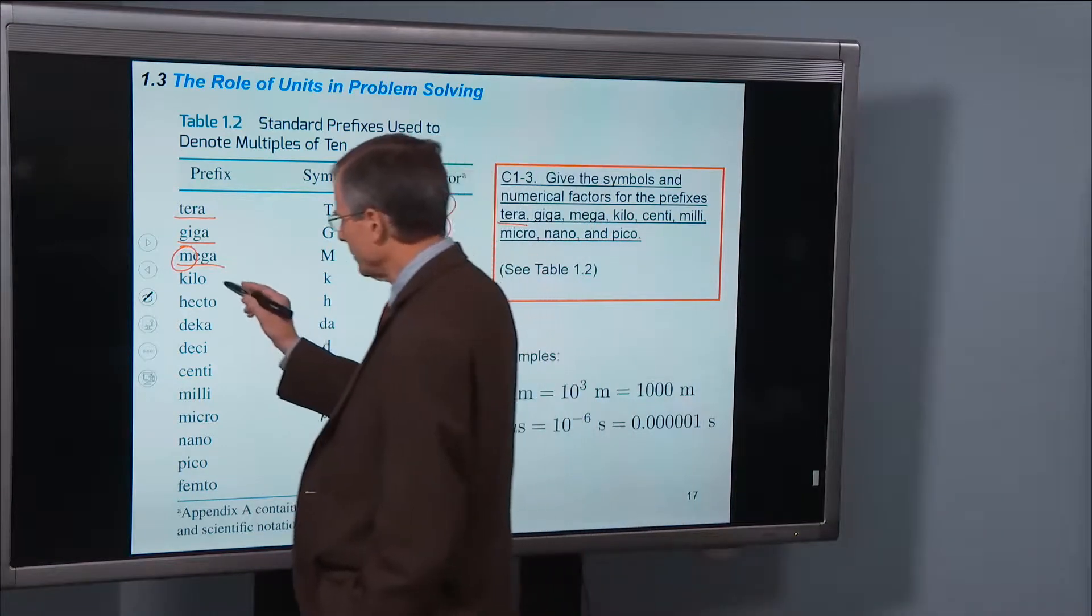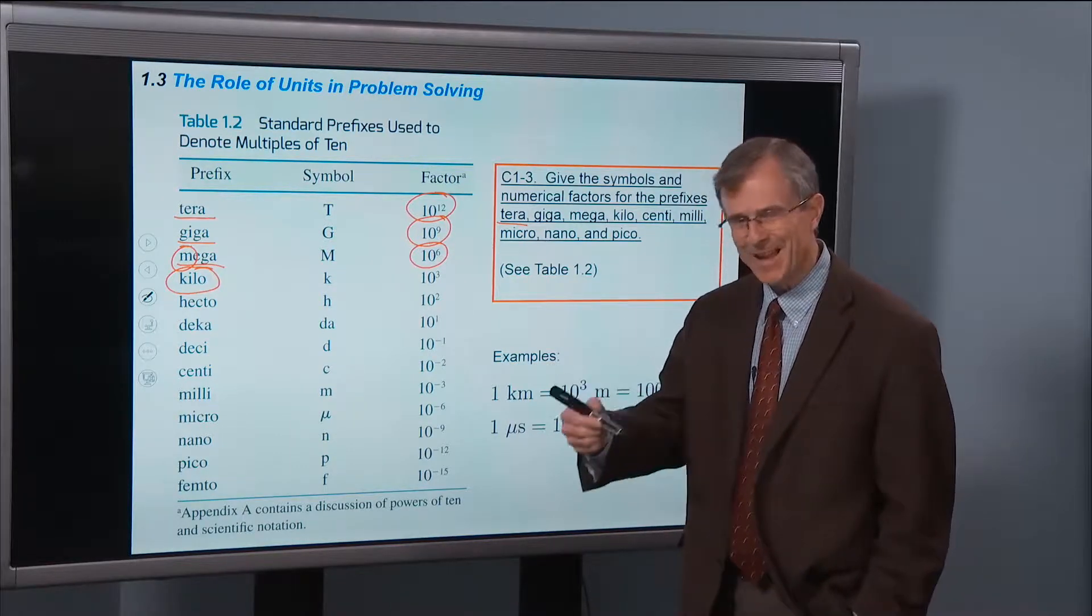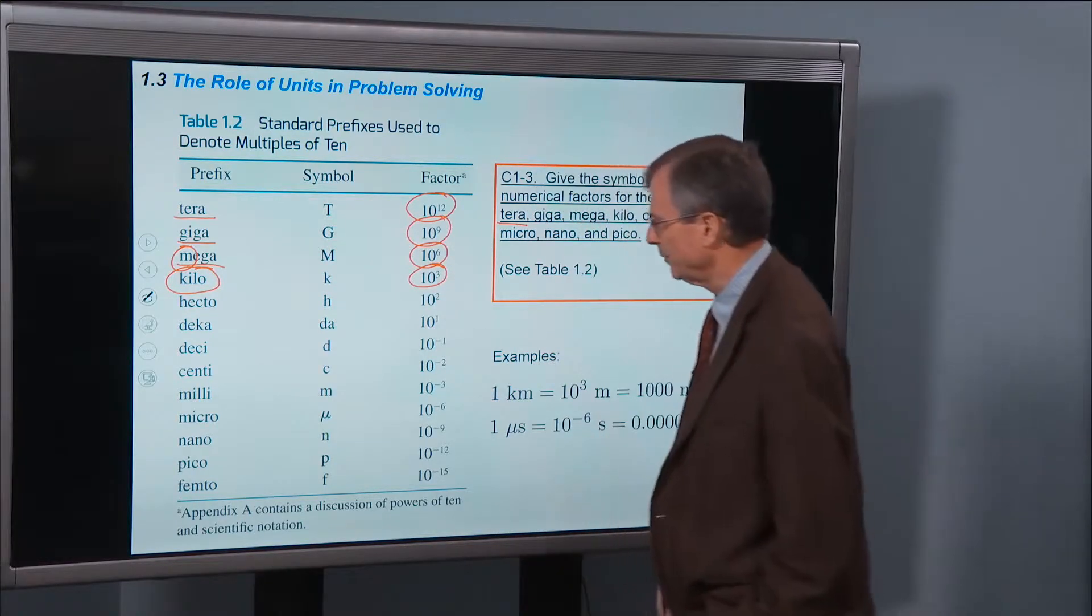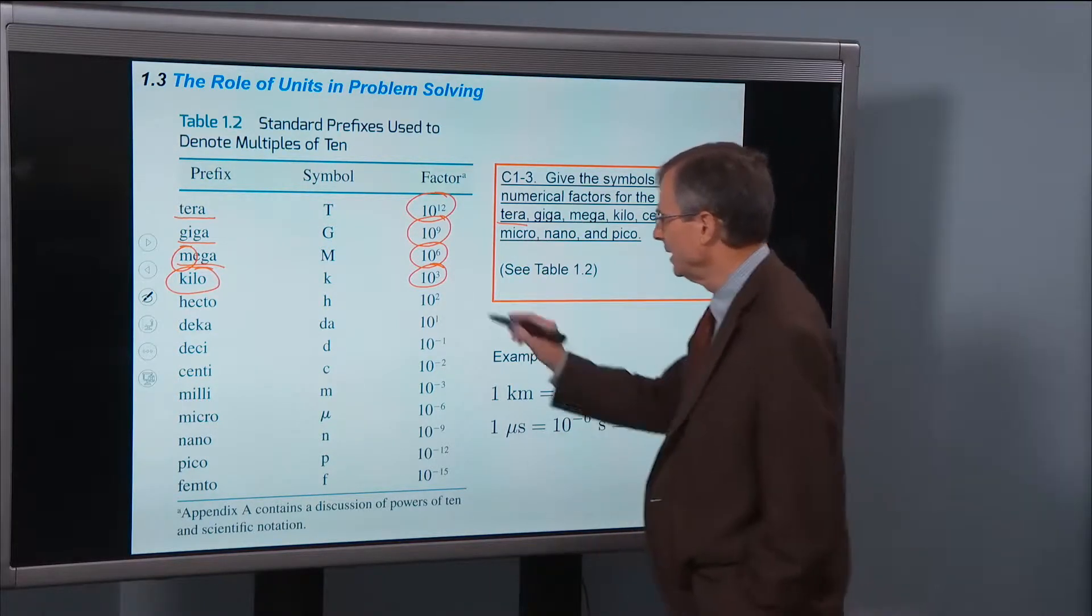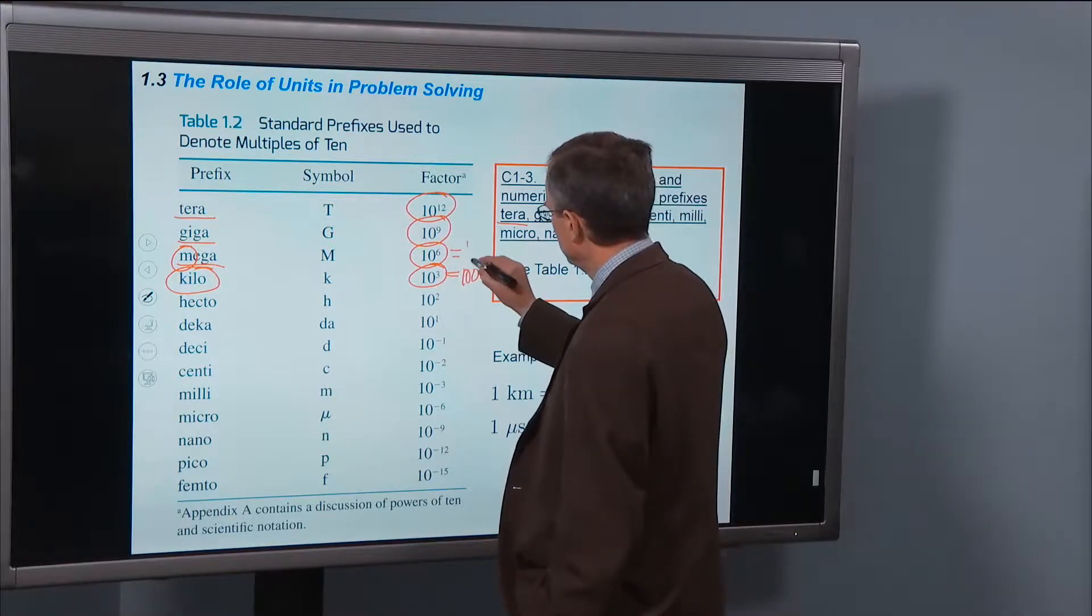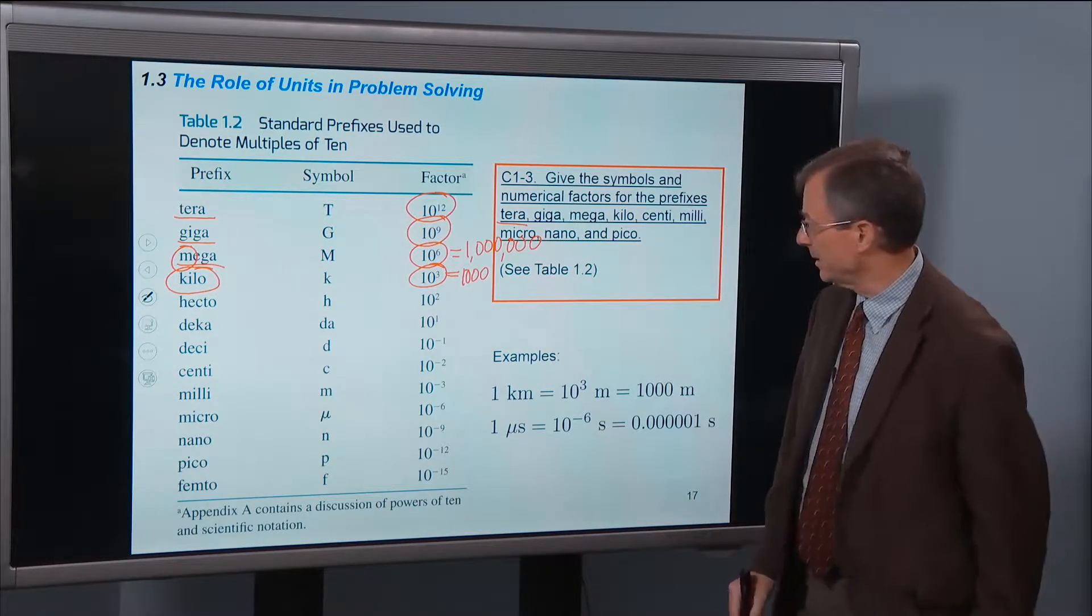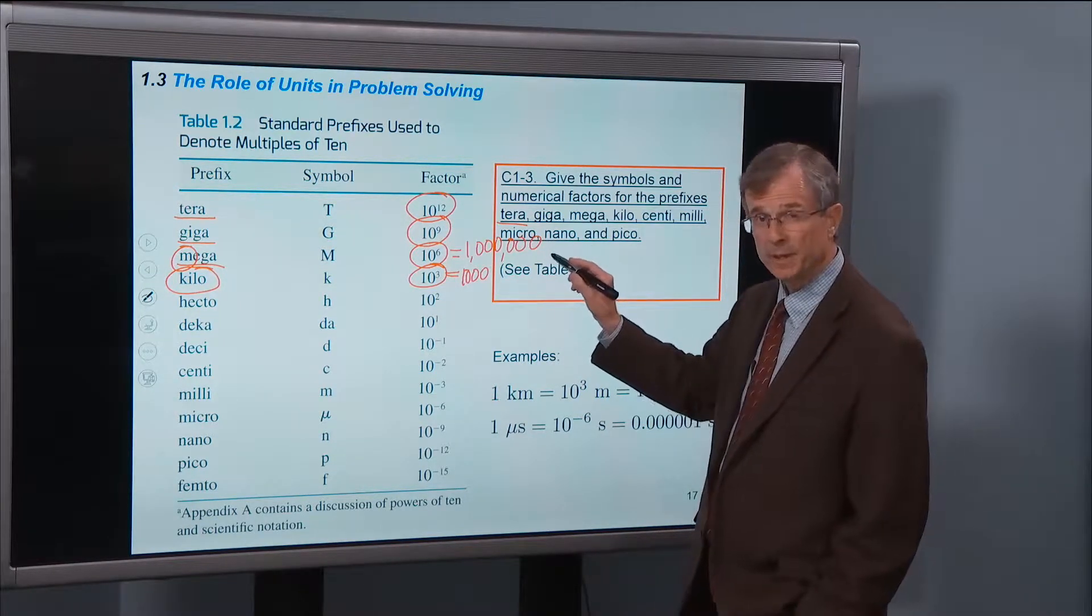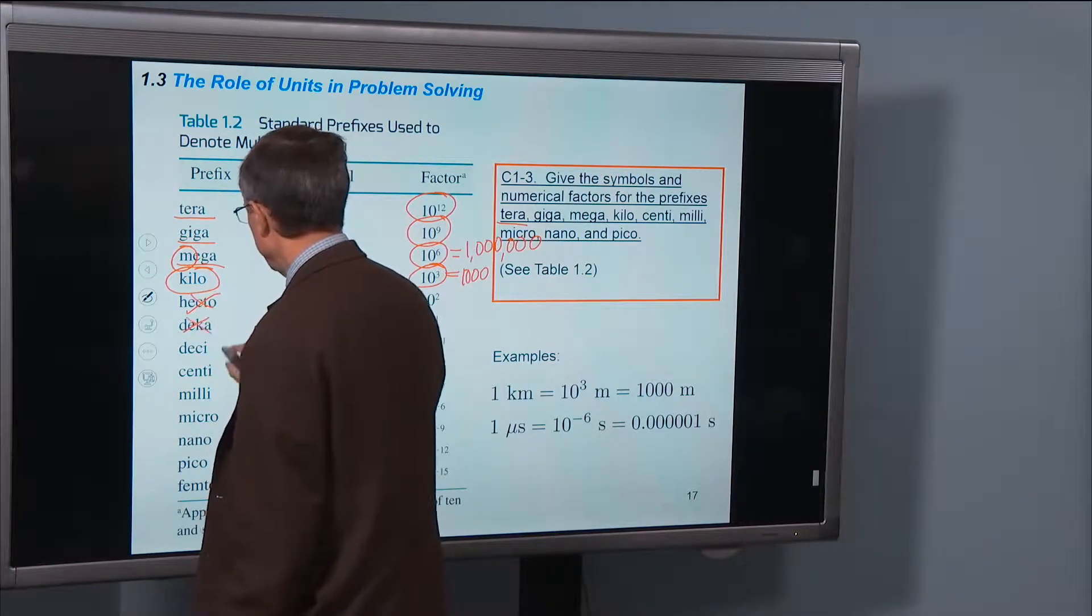Kilo - a kilometer, as many of you runners know, a kilometer is a thousand meters or 10 to the 3 meters. So that's one that's very familiar. Kilogram is another example, a thousand grams. 10 to the 3 is a thousand. Just a reminder of what standard scientific notation looks like. Hecto we won't really worry about too much. Deca we don't use too much.